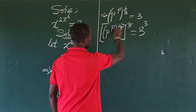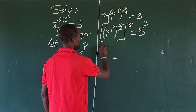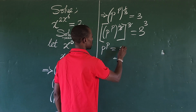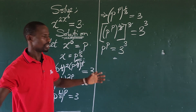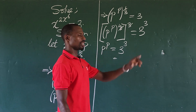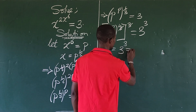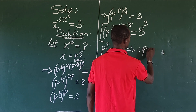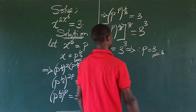According to the index law, the one over three and the cube cancel out, leaving us with p to the power of p equals three to the power of three. This implies that p equals three.